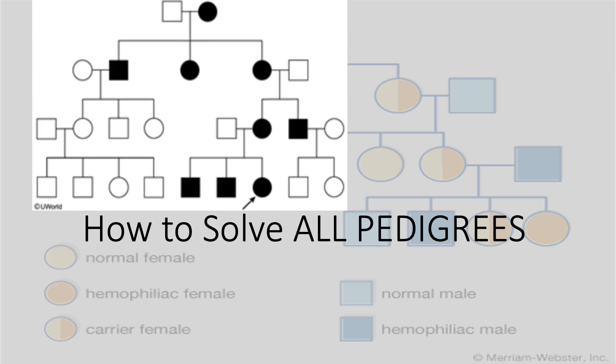It will show you something like that and will point to one of the offspring and then ask you what is the mode of inheritance of this condition. What I want you to do is to first look back at the parents.